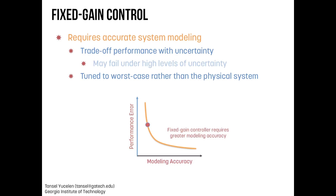We deal with uncertain systems. The first approach is to design a fixed-gain controller — no adaptation. Fixed-gain controllers, like robust controllers, first of all require accurate system modeling information. Looking at this graph, we need to minimize a performance error in order to improve system achievement goals. In order to minimize this error, we need to know the model more and more. There exists a direct trade-off between performance and uncertainty. If we have high levels of uncertainty, fixed-gain controllers may fail to achieve a given system performance.